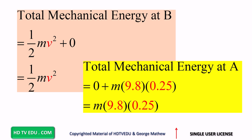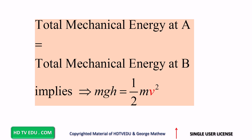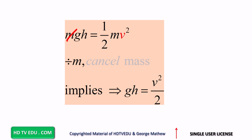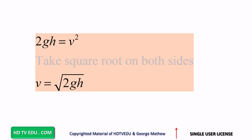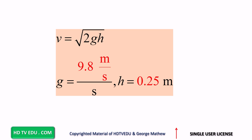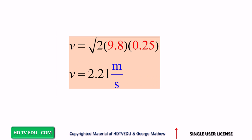Set the two equal to each other. Total mechanical energy at A equals total mechanical energy at B, which implies mgh equals one-half mv squared. Cancel mass on both sides, so gh equals v squared over 2. Multiply both sides by 2 to get 2gh equals v squared. Take the square root, and v equals the square root of 2gh. We know g is 9.8 meters per second per second and h is 0.25 meters. Substituting those numbers, the speed v equals 2.21 meters per second.